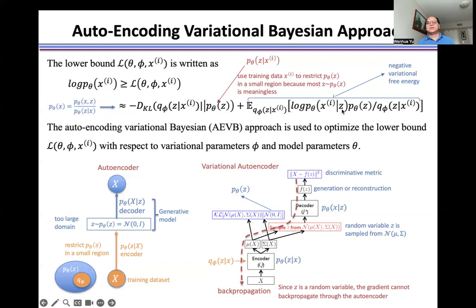z is a random variable assembled from distribution q. Therefore, we cannot calculate the gradient of L to change the autoencoder model in the backpropagation method.